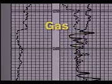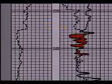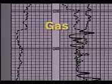Thus, this type of curve separation on the neutron density combination log is often an excellent indication of gas. On our example, the separation extends more or less continuously from 12,380 feet to 12,408 feet, indicating a gas column of 28 feet.